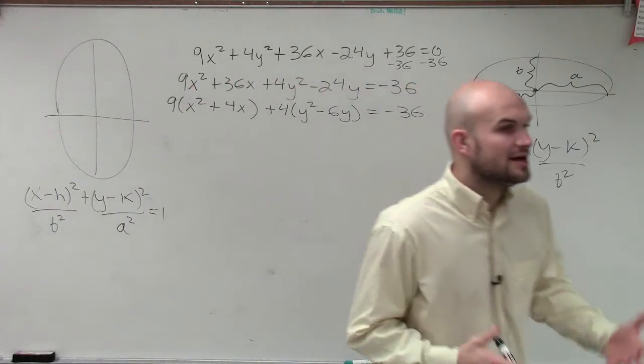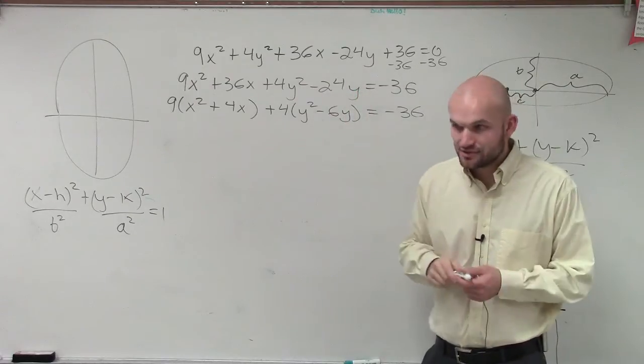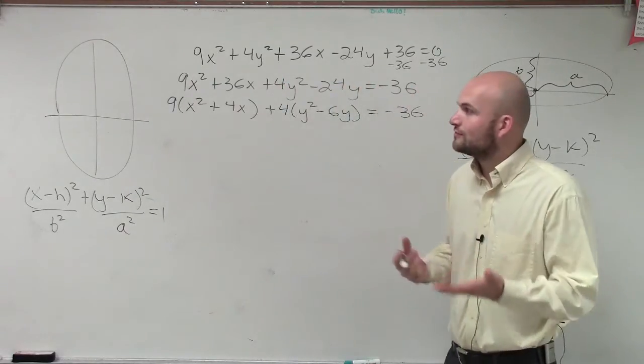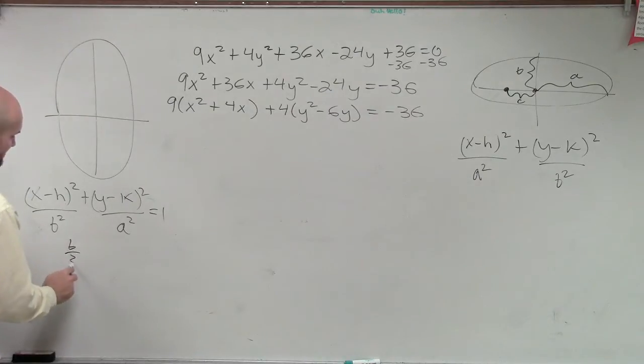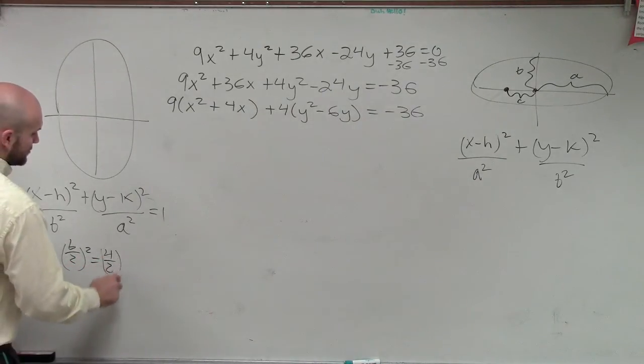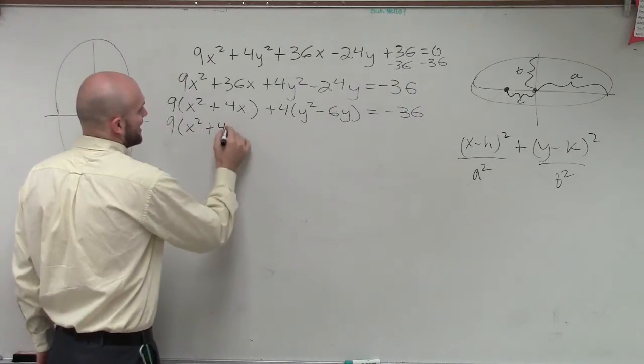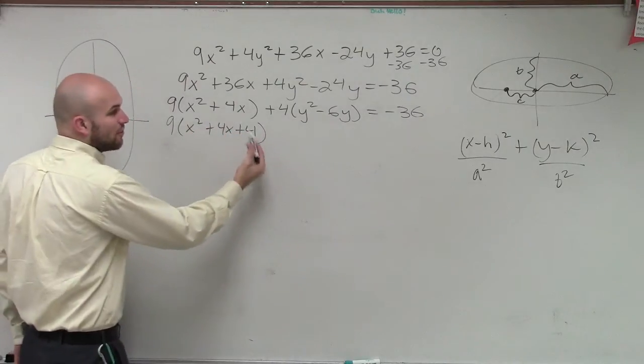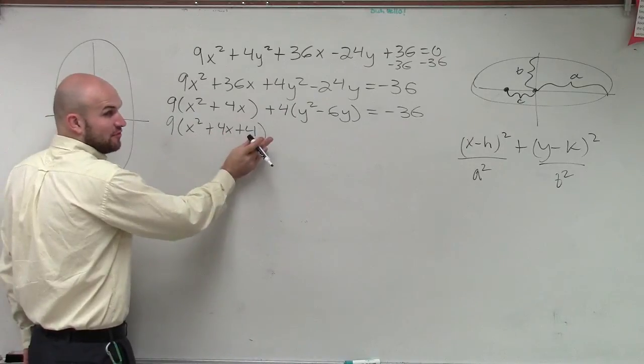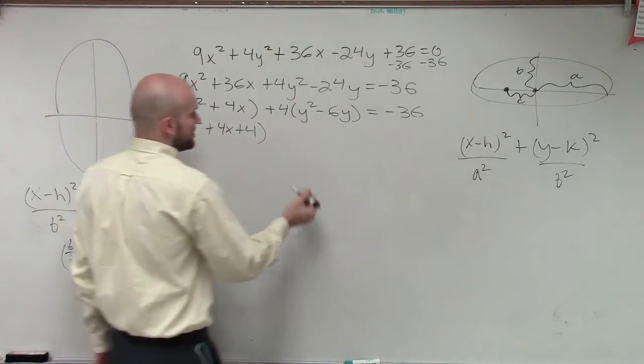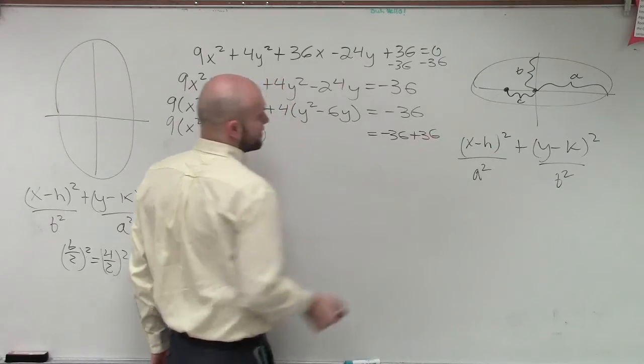To complete the square, we do our famous b divided by 2 and square it. In this case for the x's, b/2 squared equals 4/2 squared. 4 divided by 2 is 2, 2 squared is 4. So I'm going to say x² + 4x + 4. Now I'm adding the 4 inside the parentheses, so that 4 is being multiplied by a 9. In reality, I'm not just adding a 4, I'm actually adding a 36. So if I add 36 on the left side, I have to add 36 to the right side.